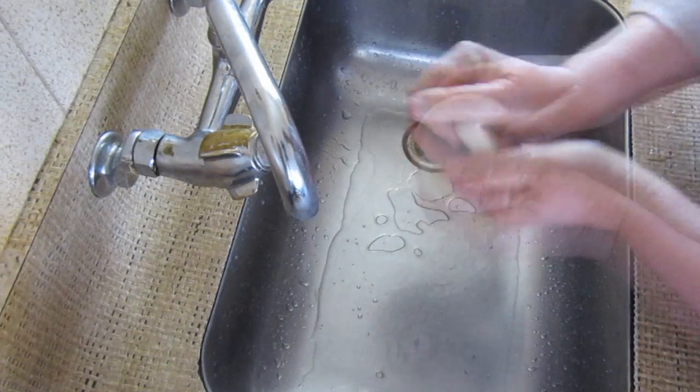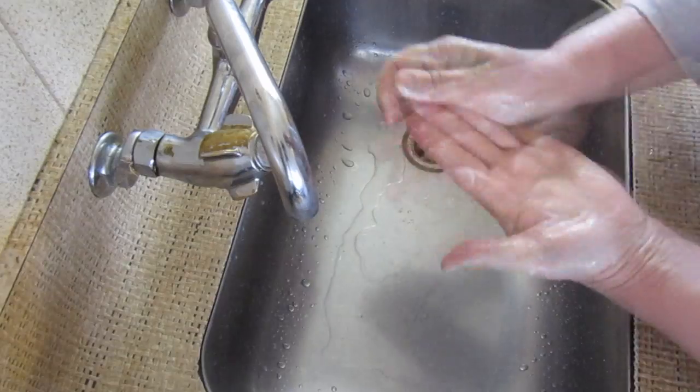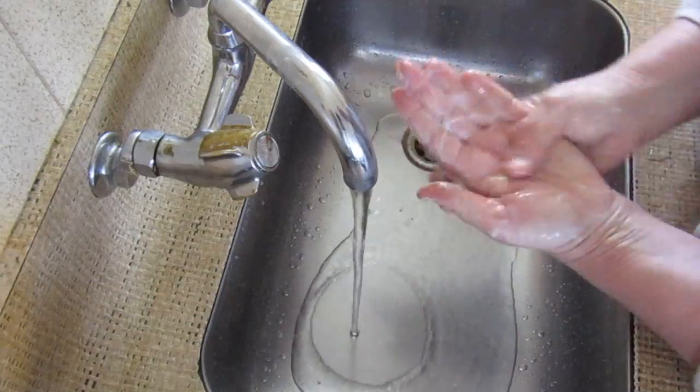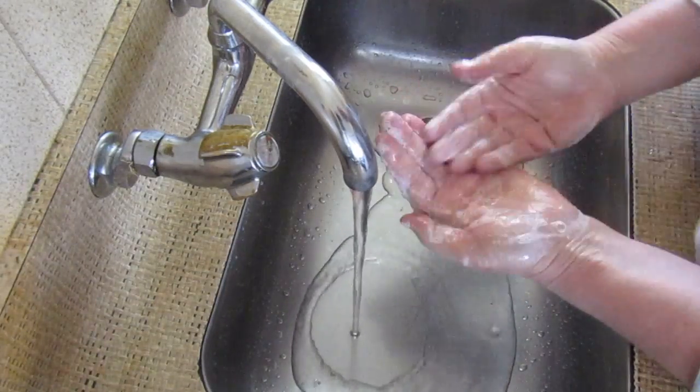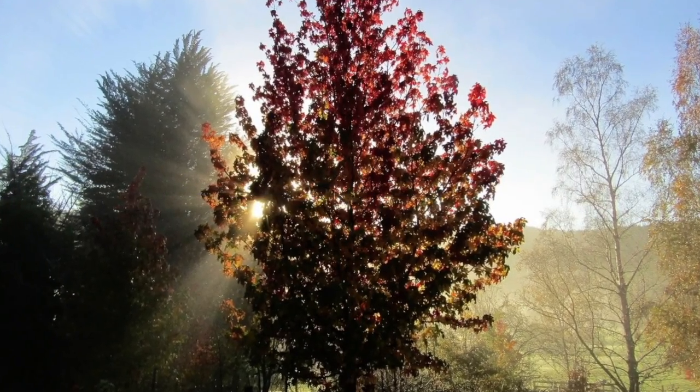The soap is only two weeks into cure and really needs at least another two weeks, but I was impatient. It took a little time to work up a lather and it was lotion-like with small bubbles. If I were to add in other oils, I'd probably put in about 5% castor oil and 20% coconut oil, but I'm happy with it overall.